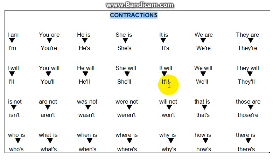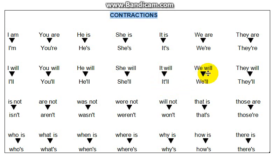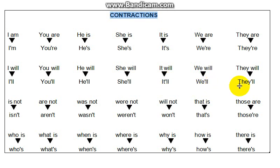'It will' becomes 'it'll,' as in 'it will be going.' 'We will' becomes 'we'll,' as in 'we'll be going.' 'He'll be going,' and 'they'll be going' — these are the shortened forms for the future 'will' contractions.